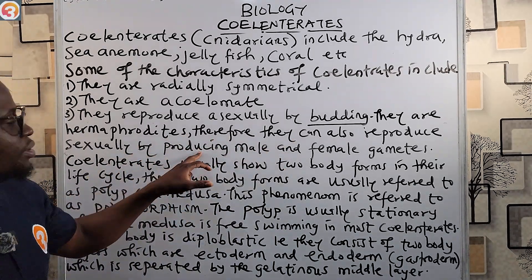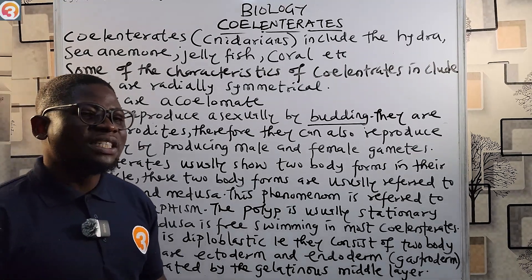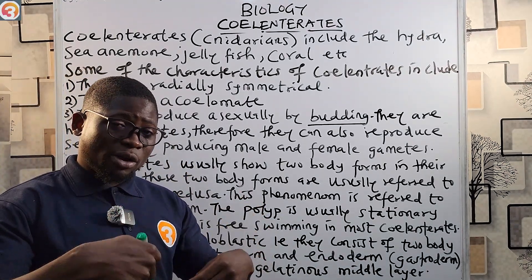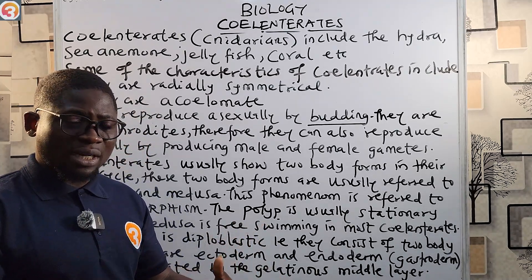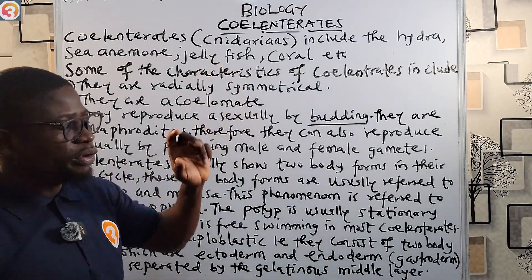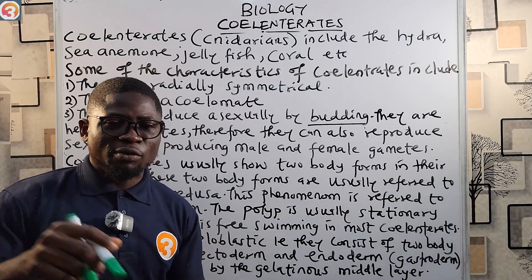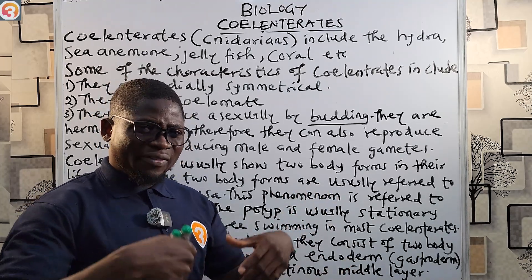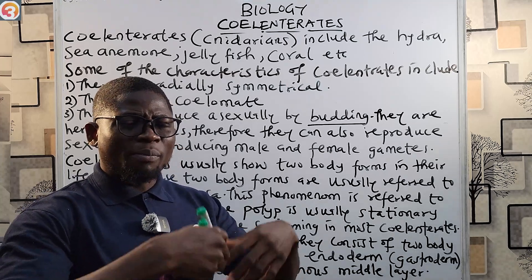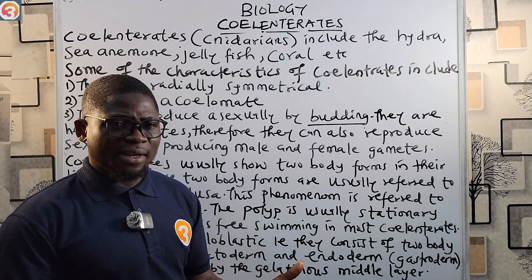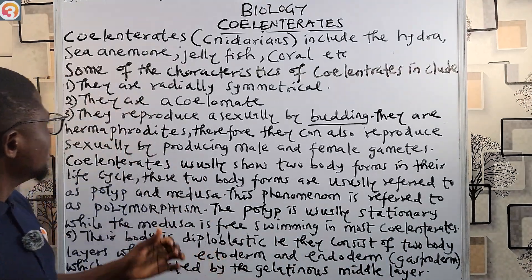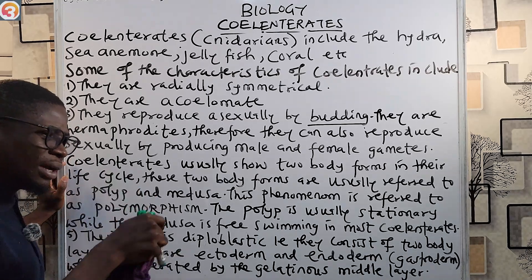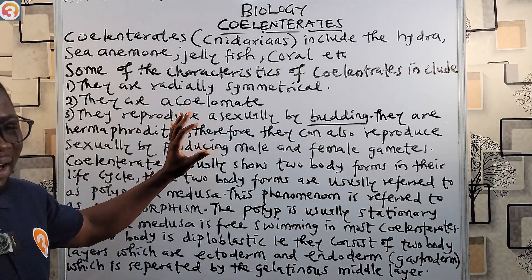For example, the jellyfish has individual separate males and individual females. Most coelenterates are hermaphrodites — having both male and female sex organs within them — but the jellyfish has separate individual males and females. In those, the male releases sperm into the water, which then fertilizes the eggs, and the fertilized eggs develop into larvae.